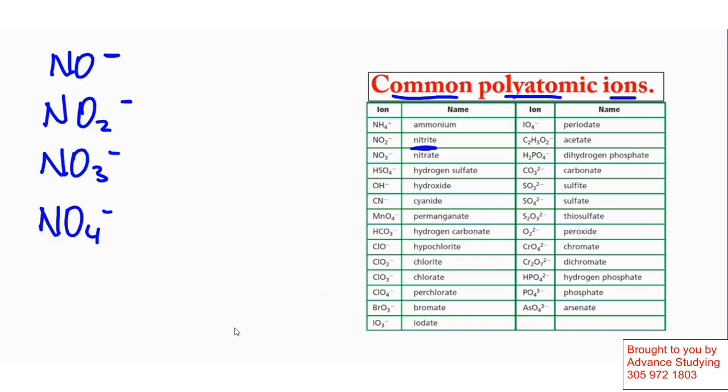These polyatomic ions have their name based on the amount of oxygen they have. If I look at the first one, I have NO1, charge of negative 1. I call this hyponitrite. Then I call the next one nitrite. That would be the NO2.